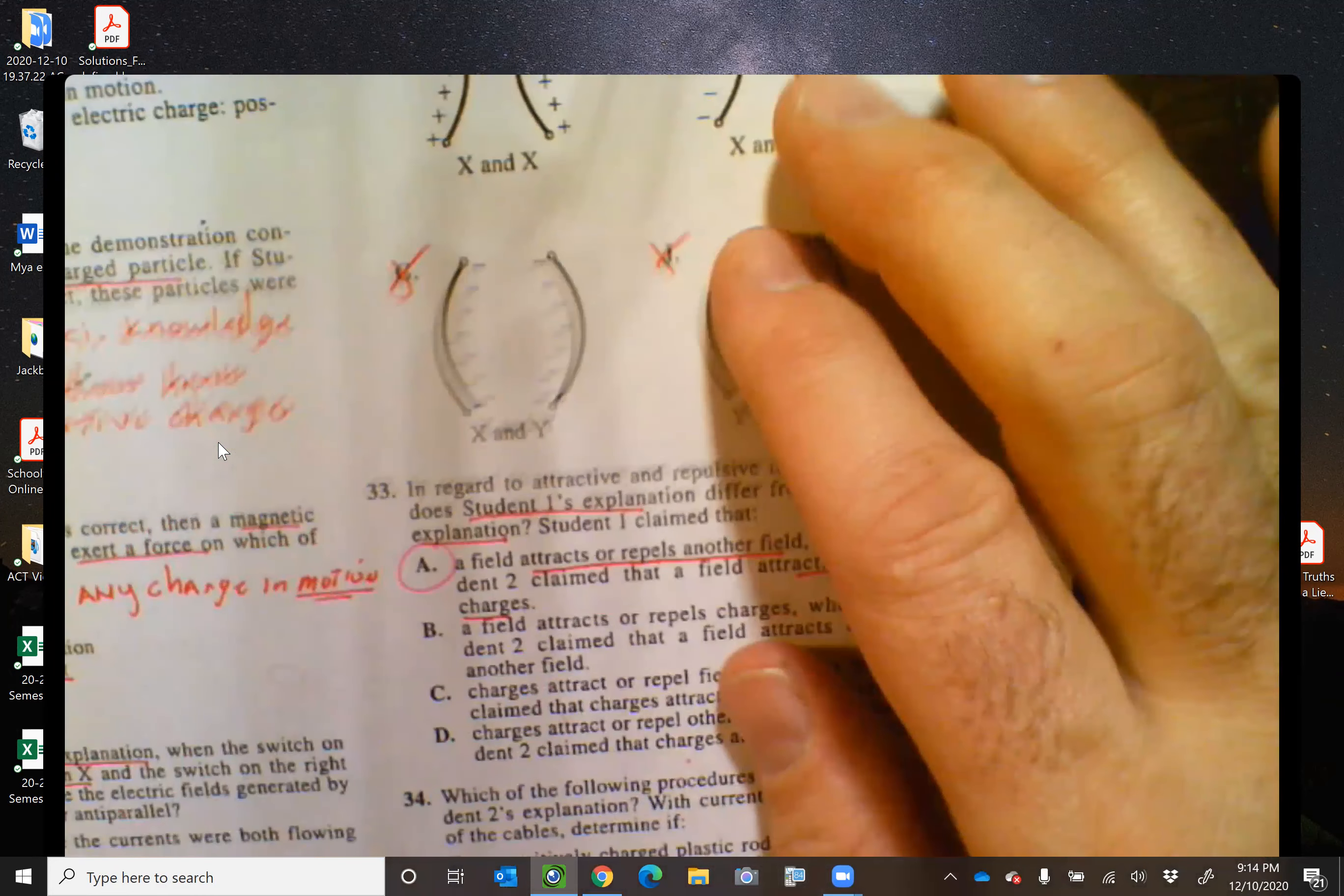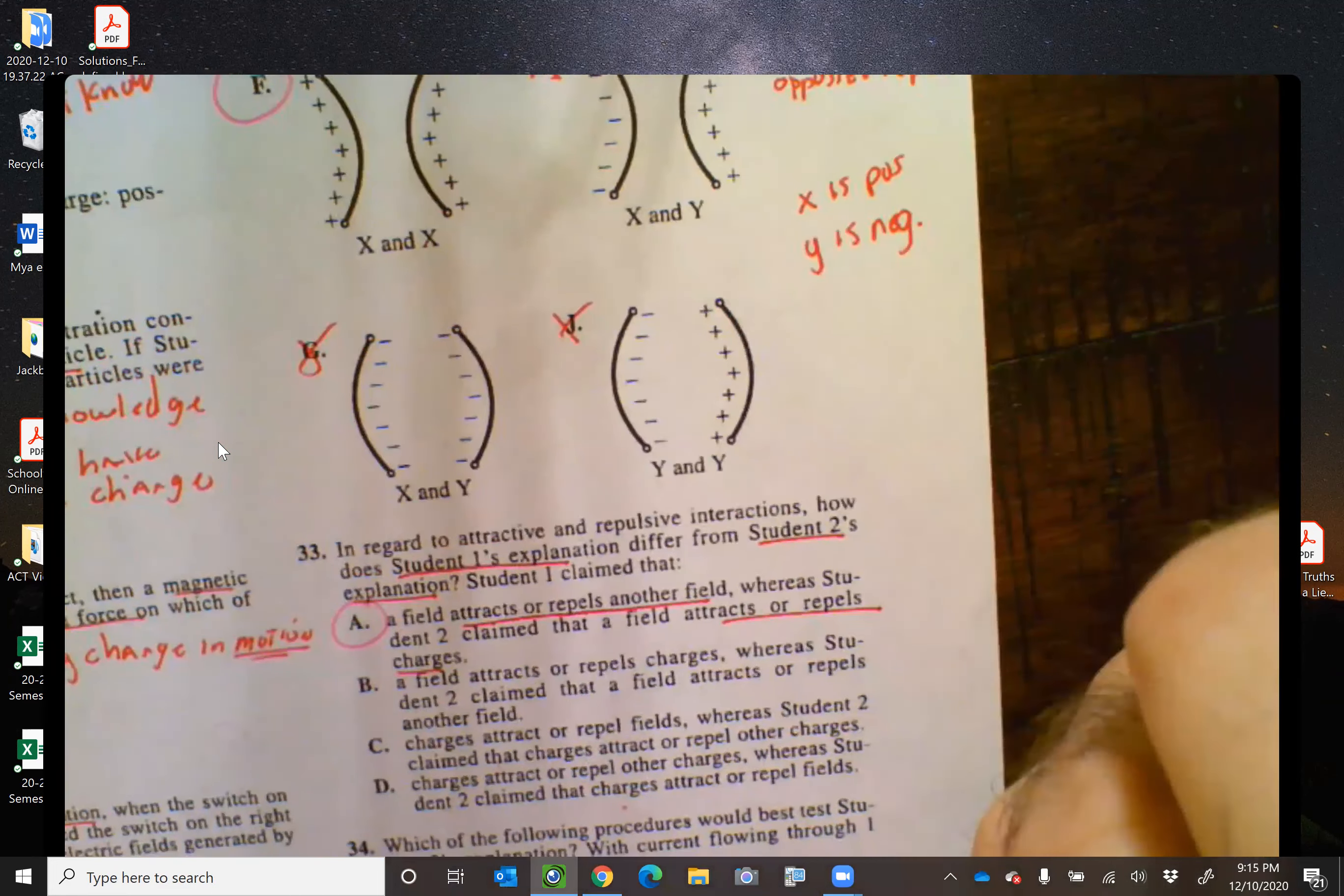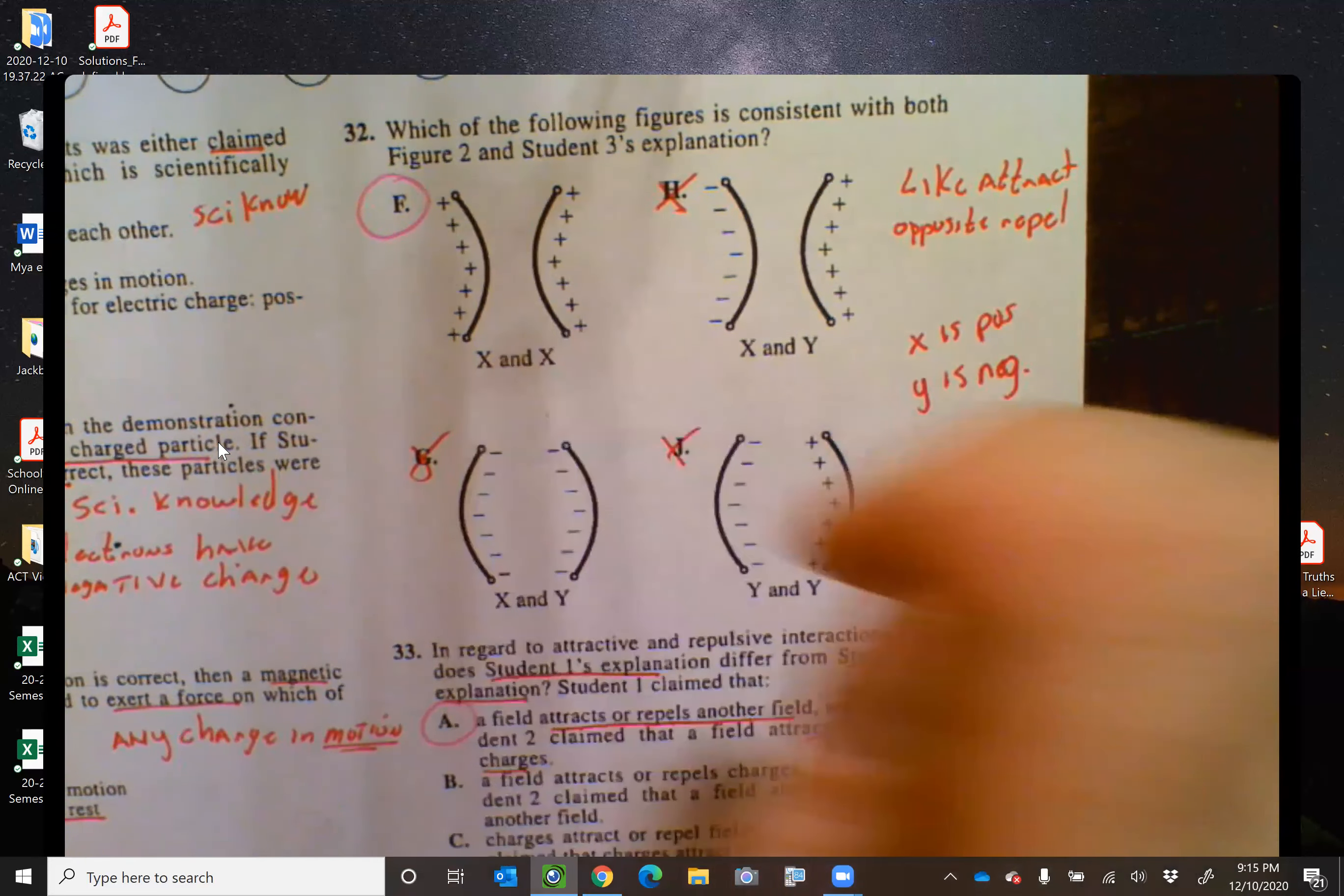32 asks, which of the following figures is consistent with both figure two and student three's explanation? I remember student three said that like attract and opposite repel. And we also saw earlier that X is upward. Now, upward means positively charged. And if I'm looking at it, all of these choices, none of them have the X as a positive charge, just this one. And this one is showing that the like charges are attracting each other, which is what student three incorrectly said. So it's got to be letter F.